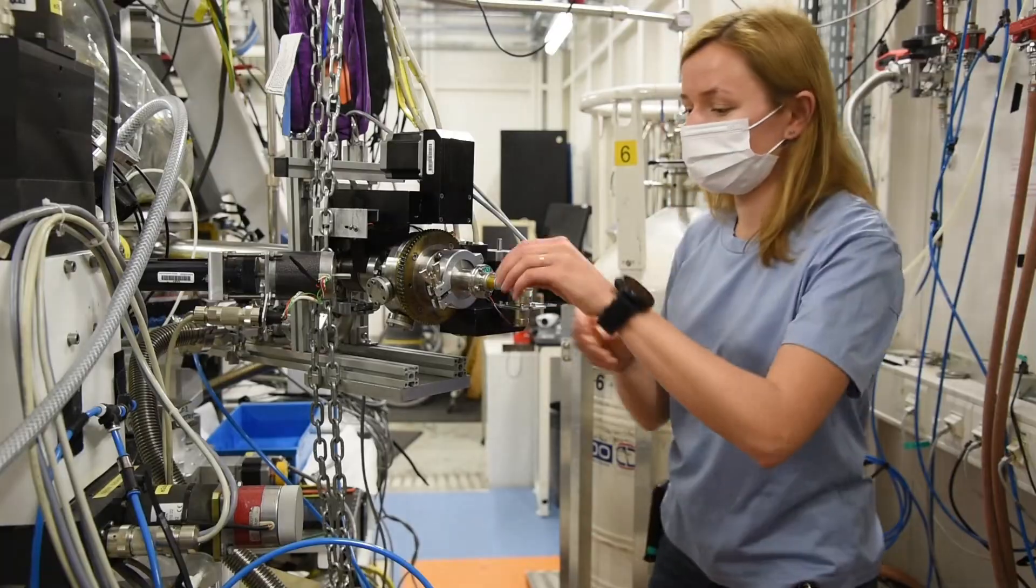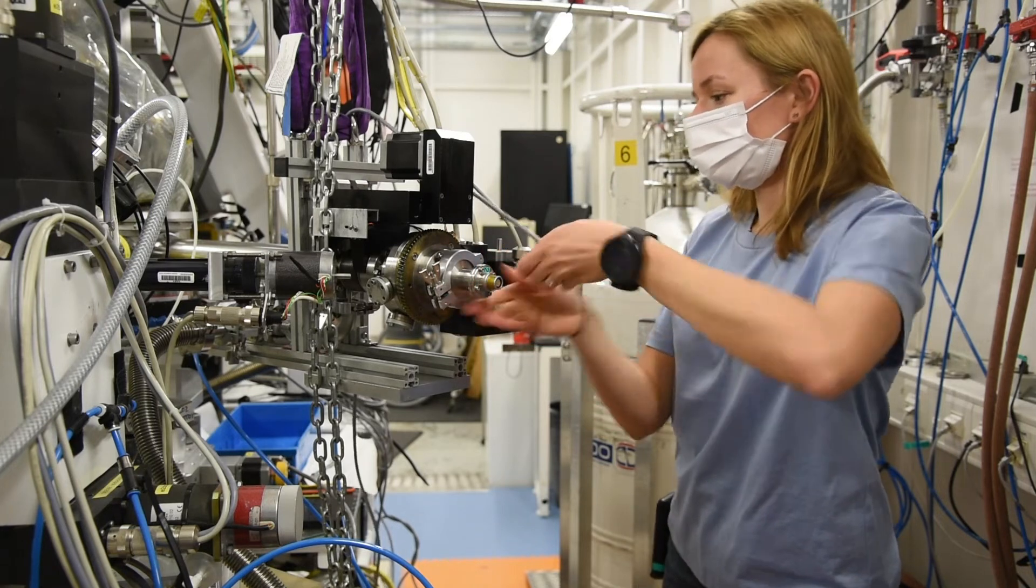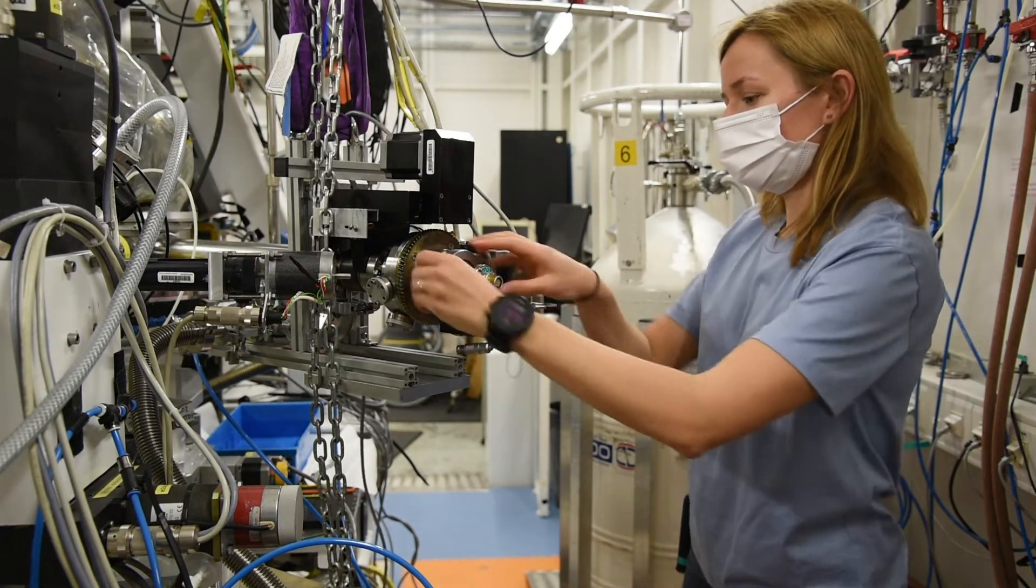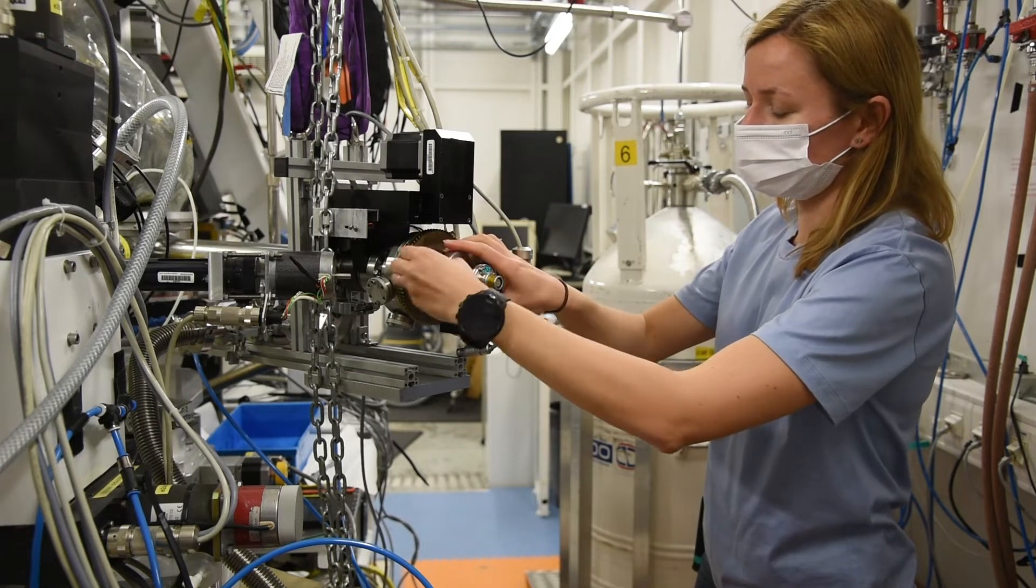Wait until the pressure is 1000 mbar. In the meantime, remove the motor cable and release the flange at the entrance of the sample rod.